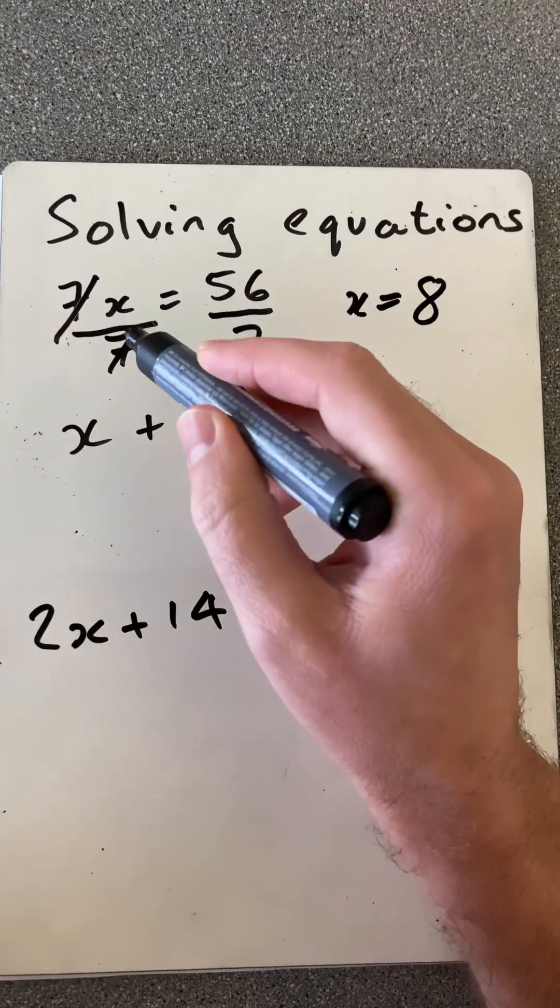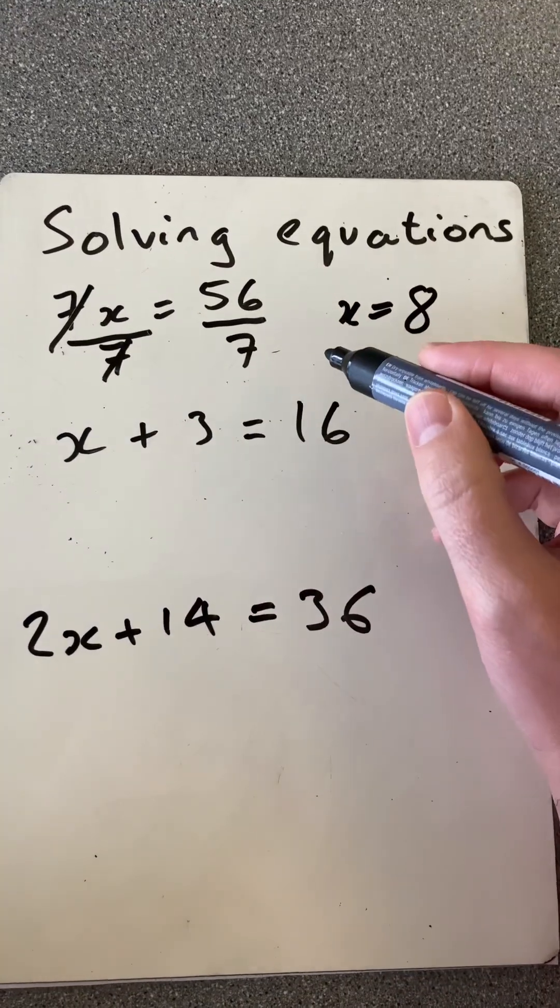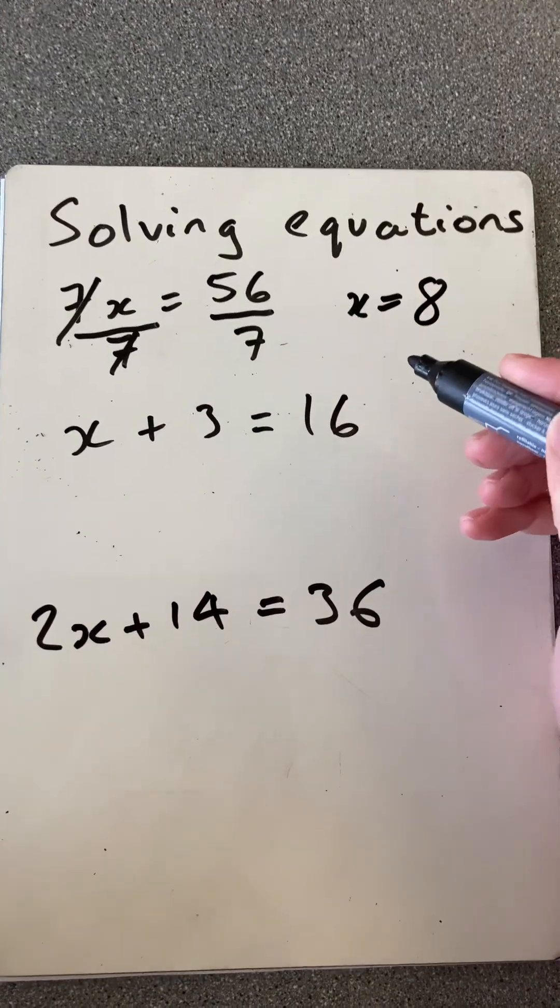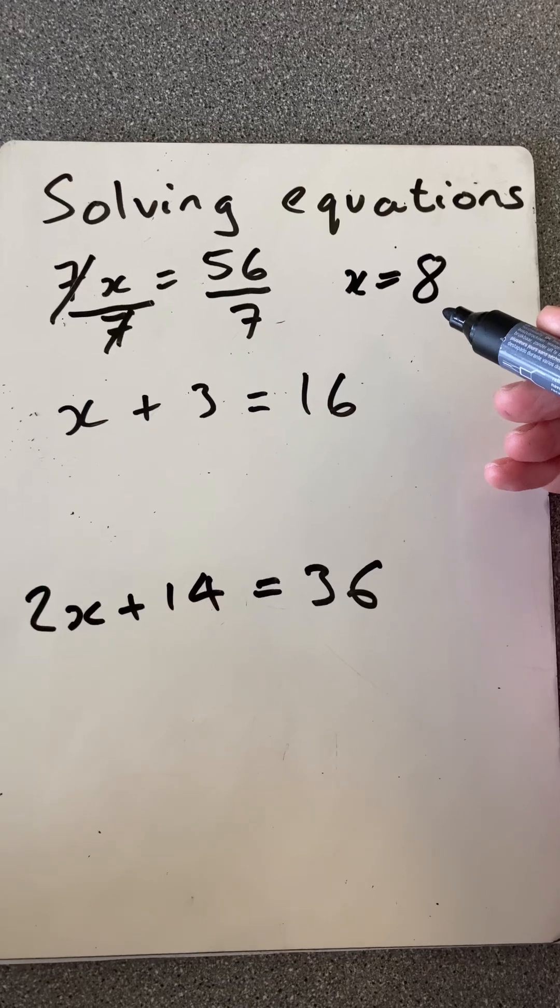Or if you're not sure, you can just turn it into an English sentence. 7 times what is 56, and go through your 7 times table, and you'll end up with x equaling 8.